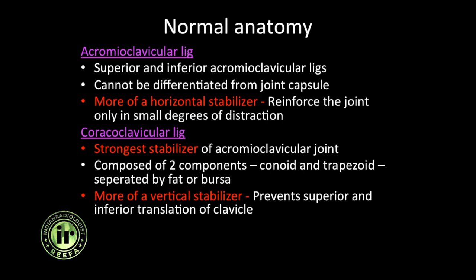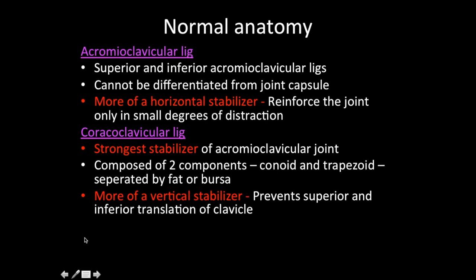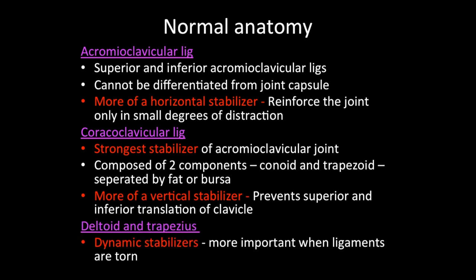The coracoclavicular ligament is the strongest stabilizer. It has two components: the conoid (medial) and the trapezoid (lateral), separated by fat or bursa. It is a vertical stabilizer, preventing superior or inferior translation of the clavicle. Whenever there is injury to the coracoclavicular ligament, the clavicle can dislocate superiorly or inferiorly. The deltoid and trapezius are dynamic stabilizers, important when the ligaments are torn.